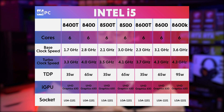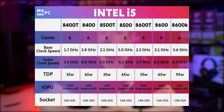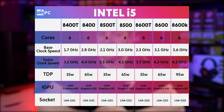The i5 line really shines if you're looking to get past 60fps in AAA games or even break into 1440p gaming. The line is also great at multitasking and processor-intensive tasks such as streaming and content creation, and it ranges from $170 to $260.